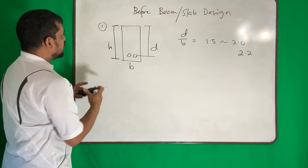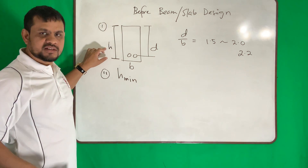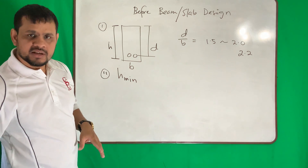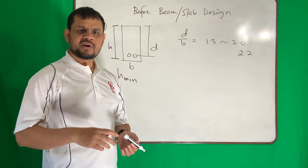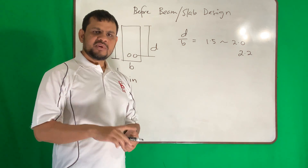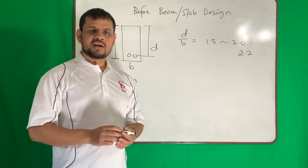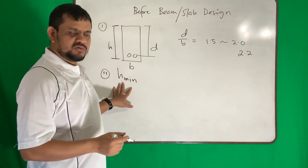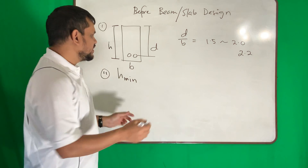Number two is H minimum — what should be the minimum thickness of the beam or slab? We should provide some minimum thickness so that when load is applied or when you walk on the structure, it doesn't vibrate too much. A very thin slab vibrates a lot — in a multi-story building you sometimes hear noise from the stair slab.